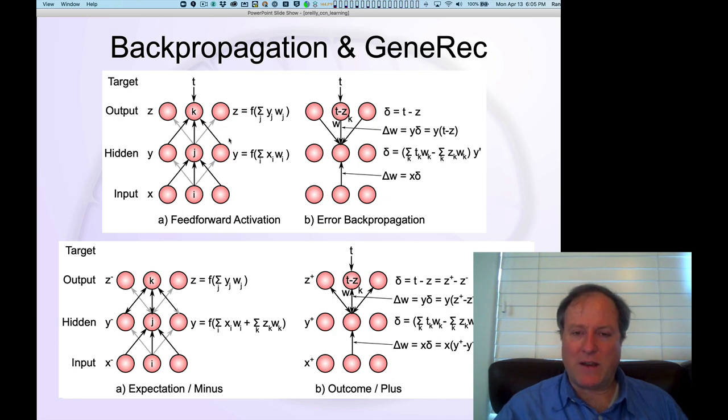And then essentially by separating out those two components, you can translate what is otherwise a kind of error delta value that gets sent back in standard error backpropagation into a difference in activation states, two different activation states.